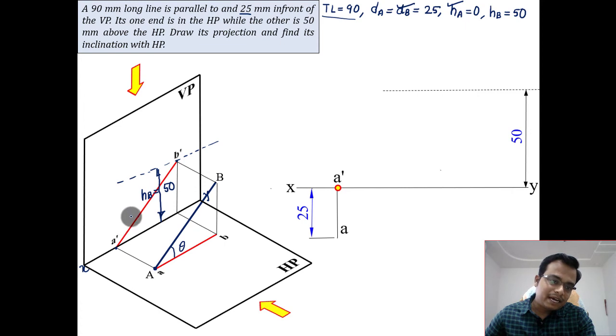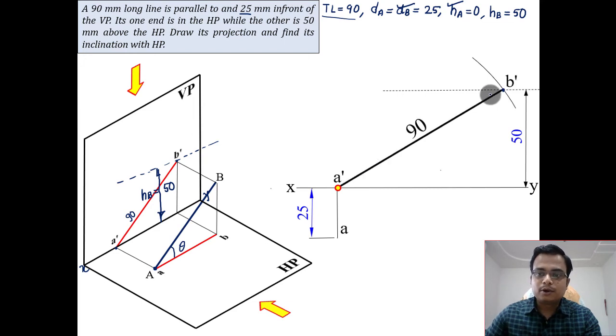Somewhere along this line, we'll have B dash at a distance of how much from A dash? The distance is 90 millimeters because it's the true length. So with A dash as the center, we'll cut an arc of radii 90 millimeters. That's it. This right over here gives you point B dash. It's that simple.